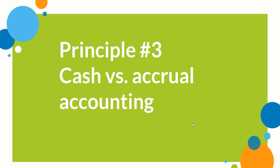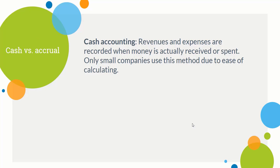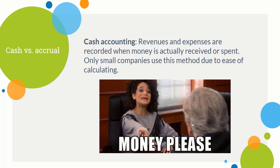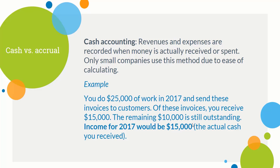The third principle is cash versus accrual accounting. Cash accounting is when you record revenues and expenses when you actually receive them or when they are spent. Really only small companies use this method due to the ease of calculating revenues and expenses. If you run a small shop or an Etsy business, you'd record revenues as the money actually comes in and record expenses whenever you actually spend money.